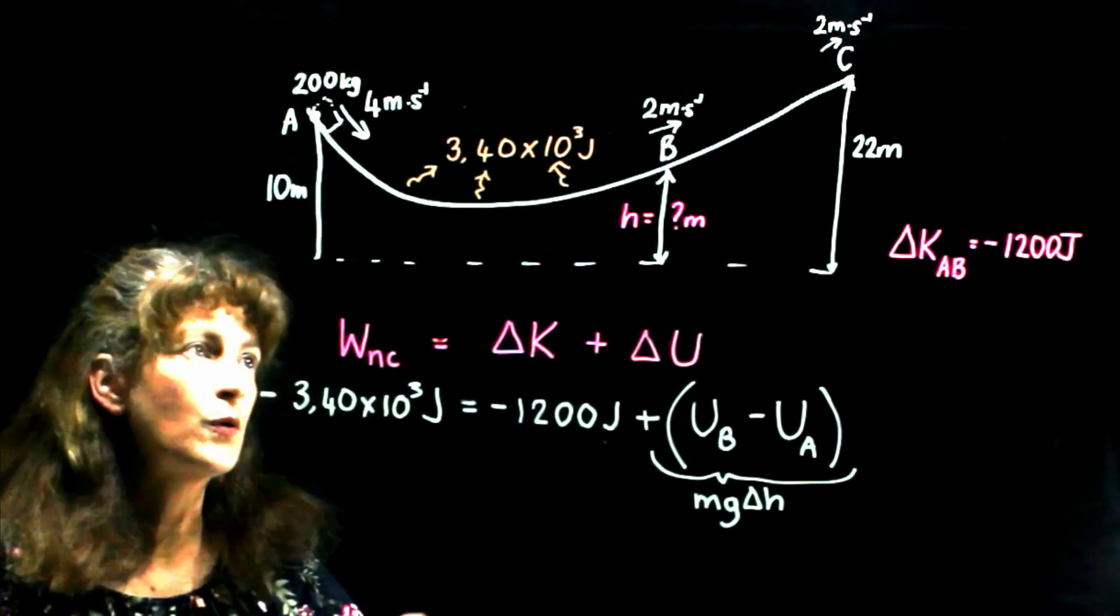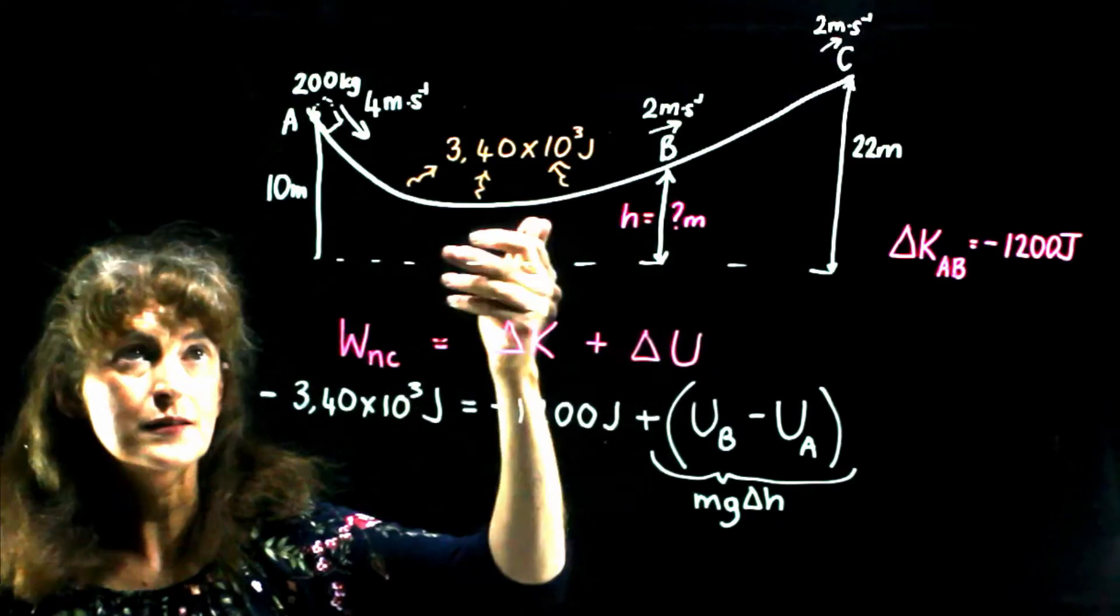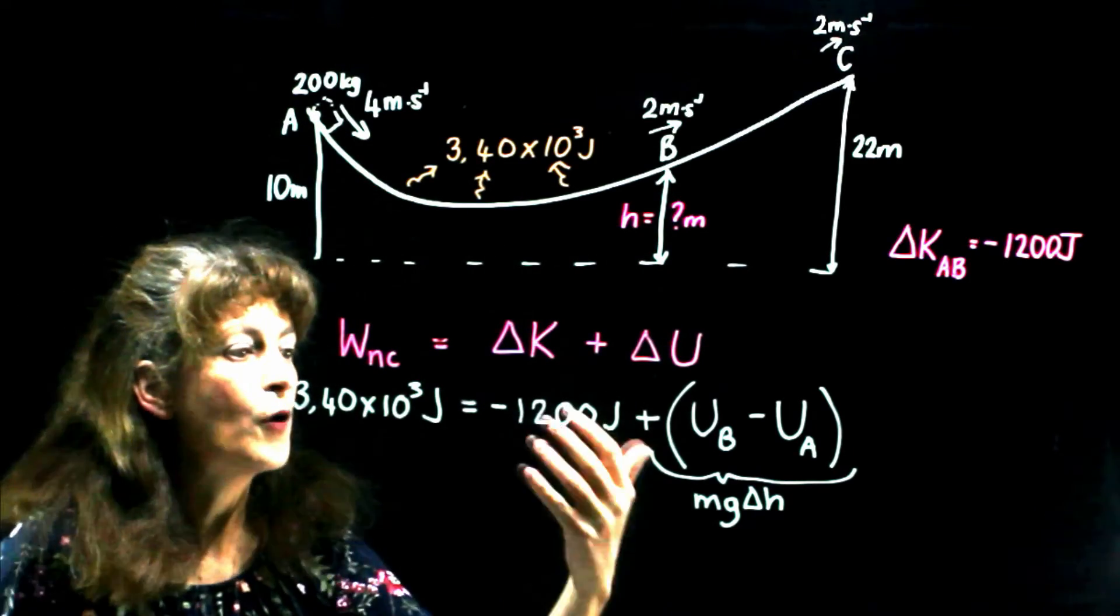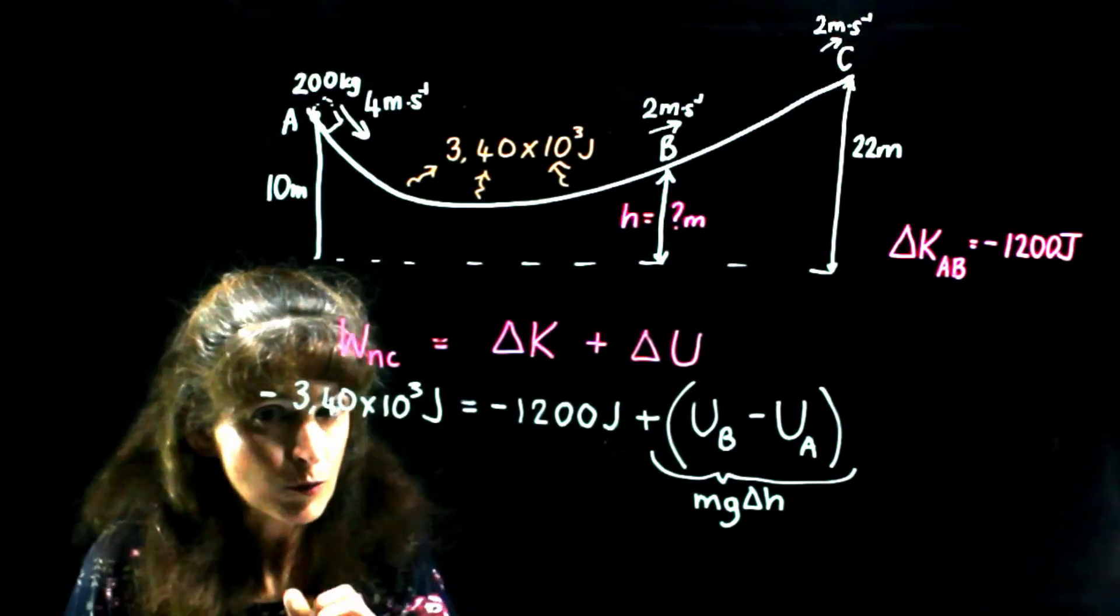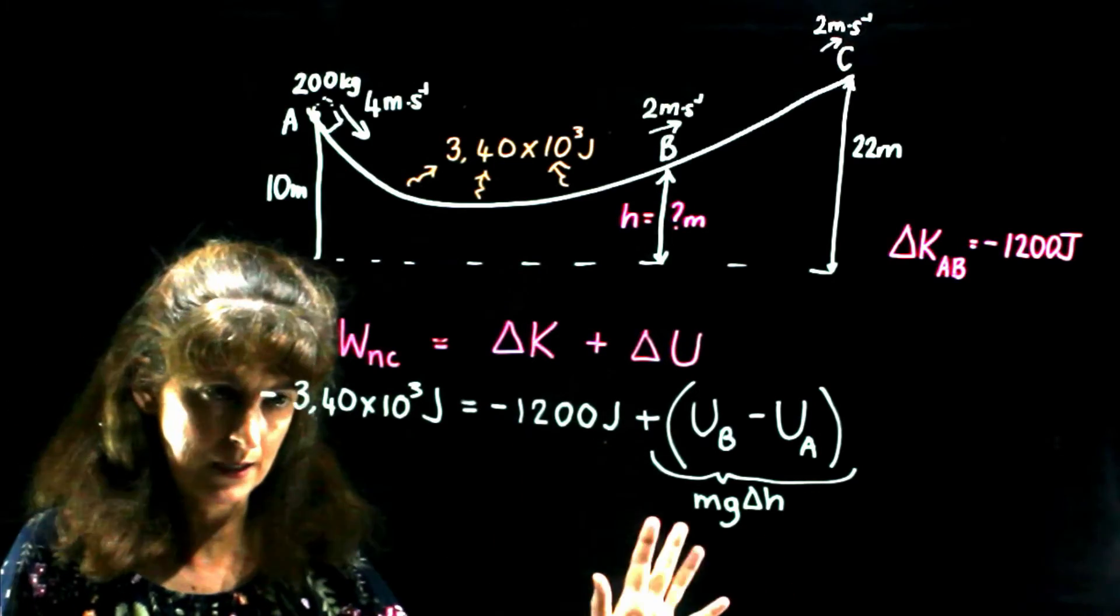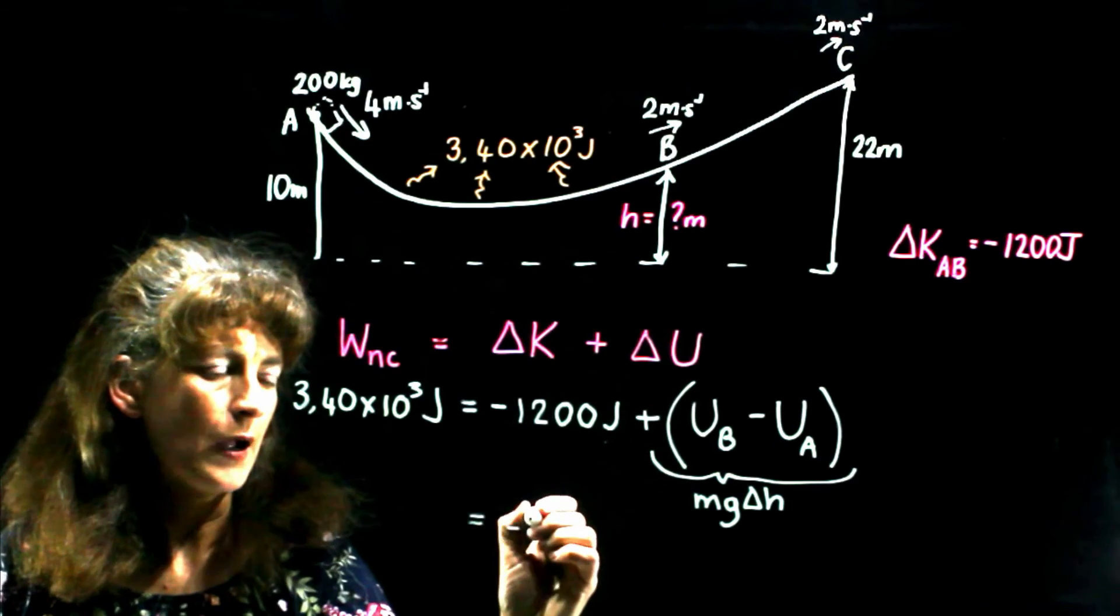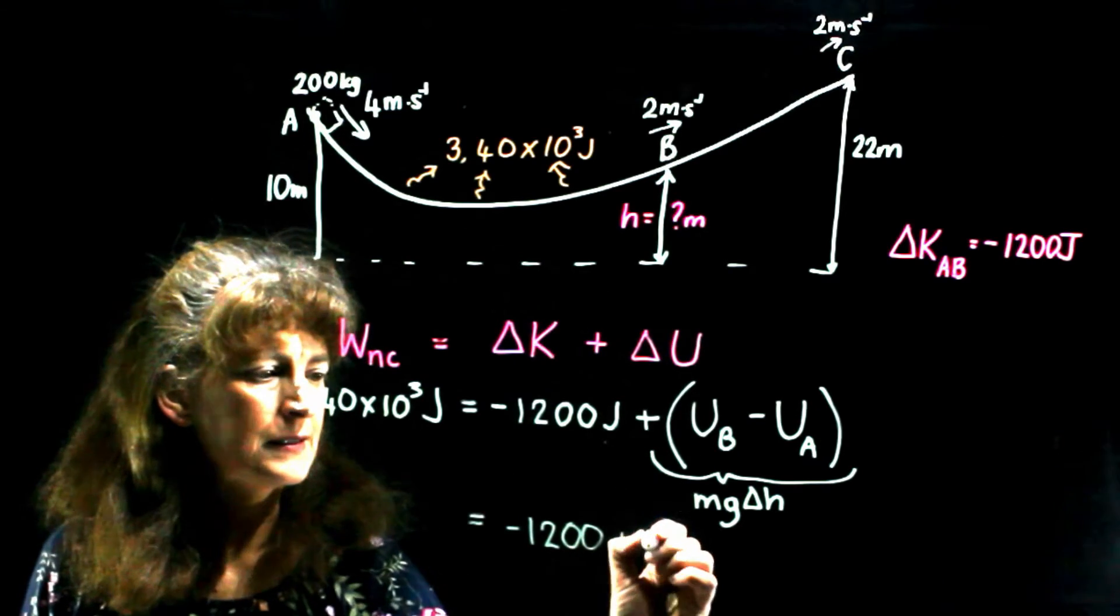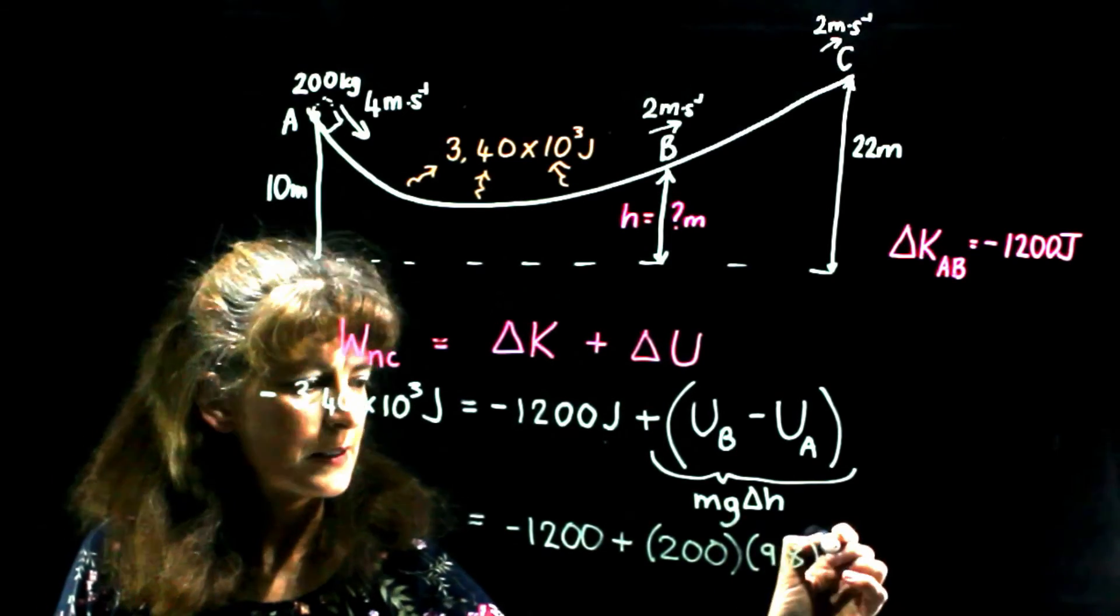Now we could go and actually write what delta H is. It's H minus 10. Final height minus initial height. But it's simpler, as far as the algebra is concerned, if for now, we just keep it as delta H. And then later, just remember, that is not actually what we were asked. We were not asked delta H. We were asked H. So we're going to have to then sort out that later. But let's just start off like this.